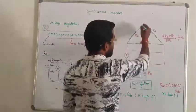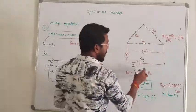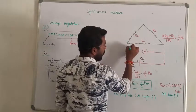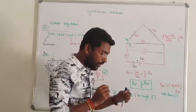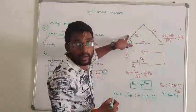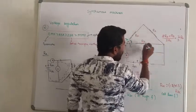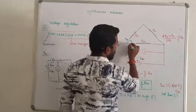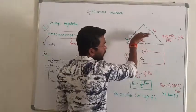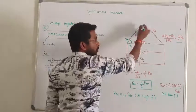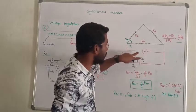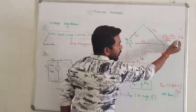Now let us see the delta connection. If we connect DC supply across any two terminals of a delta-connected machine, the current passes through one phase directly and the other two phases in parallel. The total resistance measured is 2/3 × R_A, since two resistances of R_A are in parallel giving R_A/2, in series with R_A.